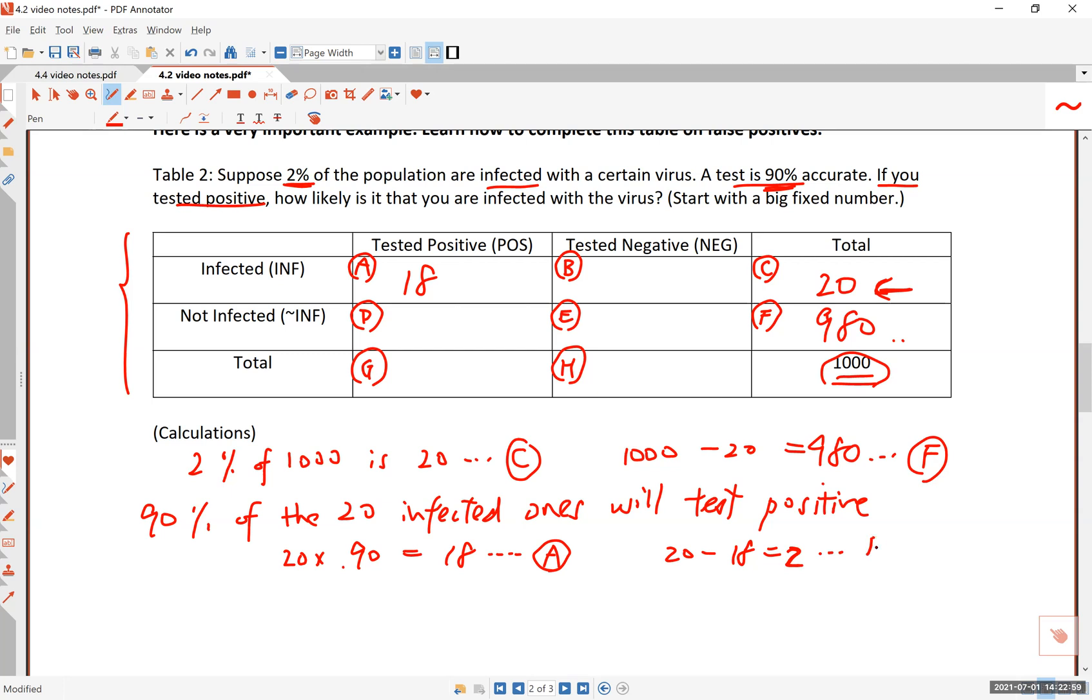The remaining people, 20 minus 18, which is 2 people, will go to box B. These are the people who are actually infected but tested negative. This is called the false negative. That's a serious problem because these two people, thinking they are not infected, will go about their daily routine, probably spreading the virus to society. Our tests are not perfect, so sometimes this happens, but a more serious problem will come later in this scenario.